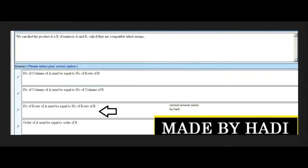Next MCQ: We can find the product A×B of matrices A and B only if they are compatible, which means: number of columns of A must equal number of rows of B, number of rows of A must equal number of columns of B, number of rows of A must equal number of rows of B, or order of A must equal order of B. The third option is the right answer.